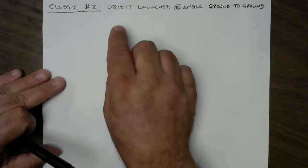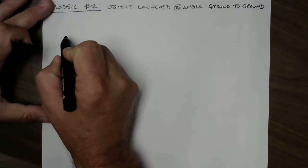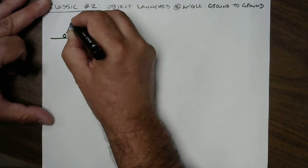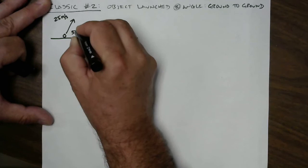We're back and in this video we're going to show you how to solve classic problem number two. Classic problem number two is a projectile motion problem and it involves an object launched at an angle from the ground and landing on the ground. Let's draw a little picture. We're going to have a ground level right here — let's be concrete about this — let's pretend we're going to kick a soccer ball at 25 meters per second.